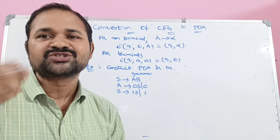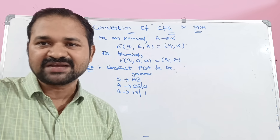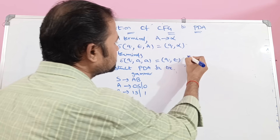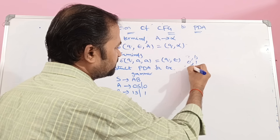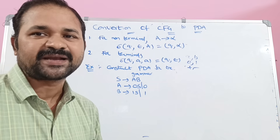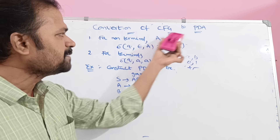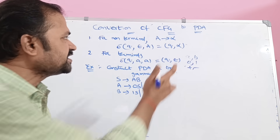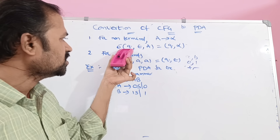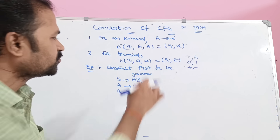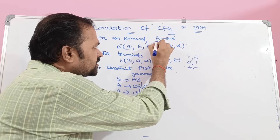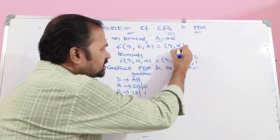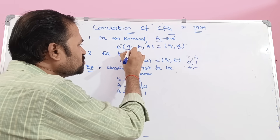Terminals means lowercase letters — 0, 1 are some symbols. AB symbols, left parenthesis, right parenthesis, plus, minus, or it may contain lowercase letters like small a, small b. So terminals means lowercase letters, digits, or some symbols. Non-terminals means uppercase letters. So when we have a production in the form A implies alpha — A is the left-hand side and alpha is the right-hand side — then we can write it as delta of (Q, epsilon, A) = (Q, alpha), where Q is the state, A is the non-terminal on the left-hand side, and alpha is the right-hand side of the production.